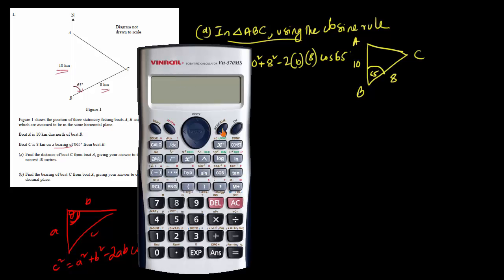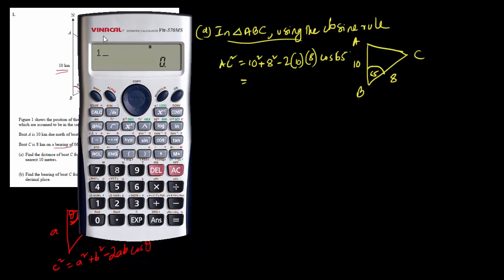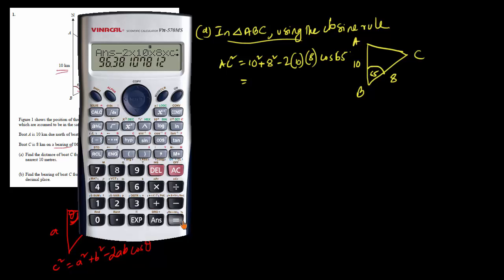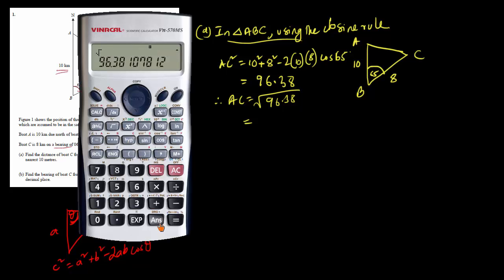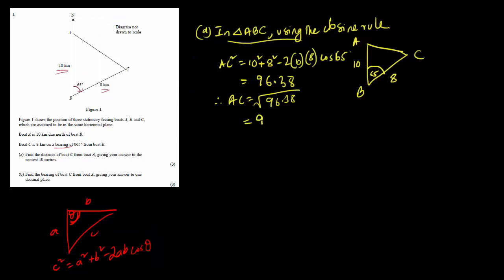Let's use the calculator. 10² is 100, 8² is 64, so adding gives 164. Then we subtract 2 × 10 × 8 × cos65°. All together we get AC² = 96.38. Therefore AC = √96.38, which turns out to be 9.82 km.